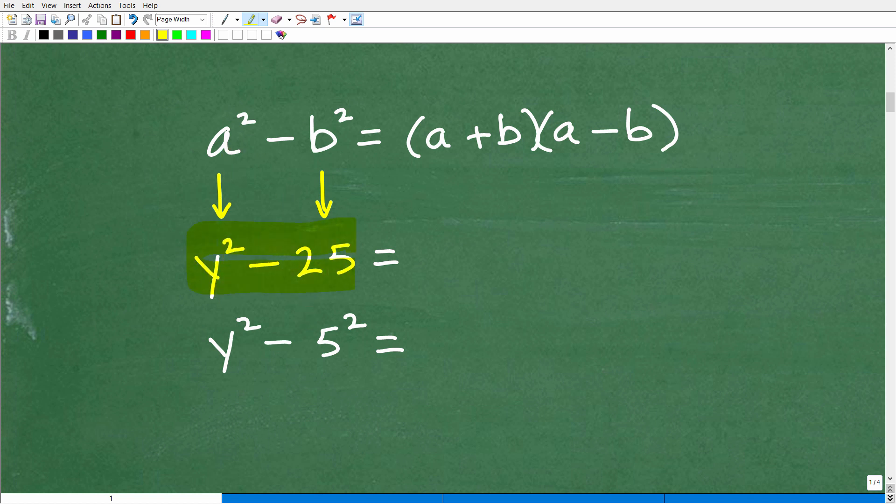So the first thing is to, if we want to factor this, is to recognize that this is the difference of two things. In other words, we're subtracting. We've got a square here. Now, it's not obvious that 25 is a square, but being a great math student, you're like, wait, isn't that 5 squared? Yeah, so you want to think of y squared minus 25 as y squared minus 5 squared.